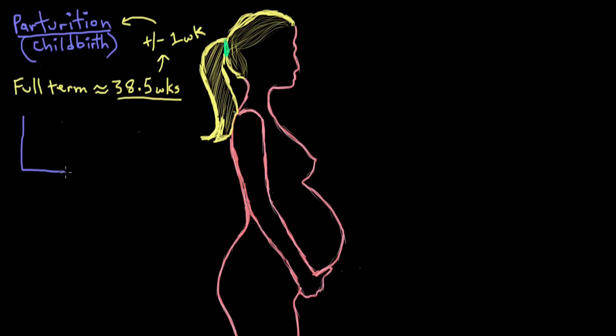For example, progesterone levels start to drop off a bit by about week 37. Progesterone levels were previously pretty high because having a lot of progesterone around relaxes the smooth muscle of the uterus, preventing it from contracting and trying to expel the baby before its due date. So the level of progesterone starts to drop at about week 37, but the level of estrogen stays pretty high.